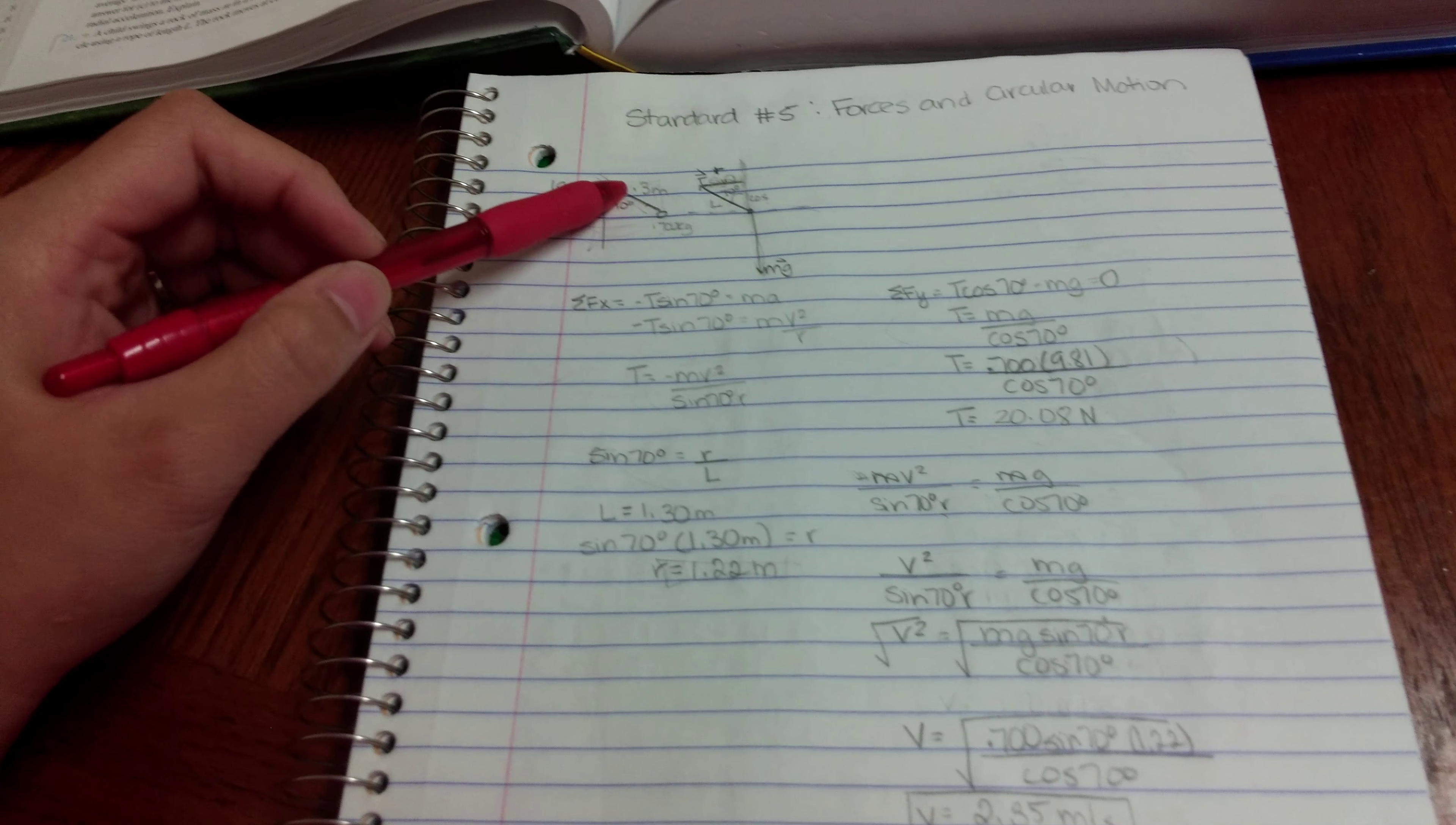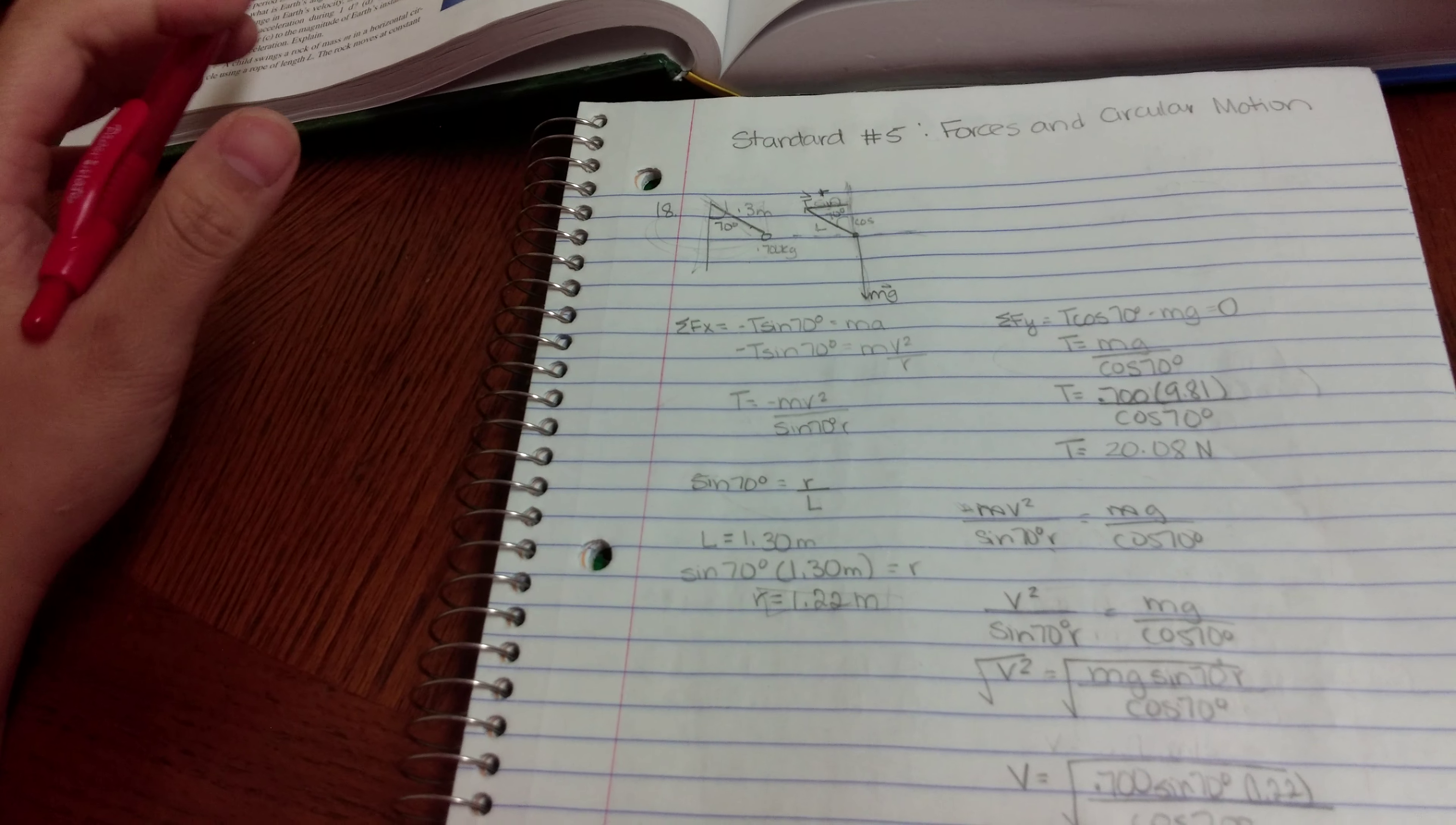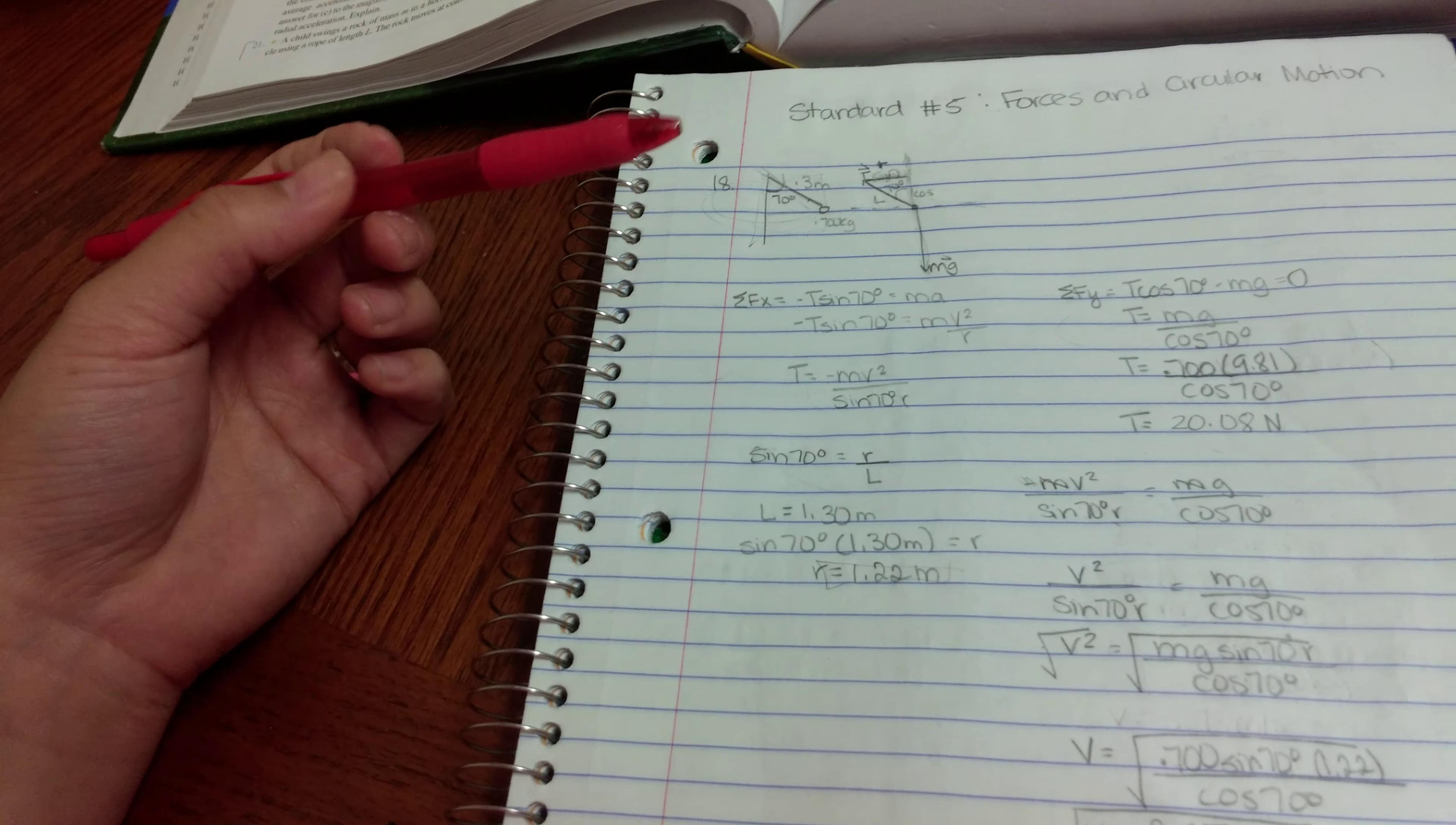And the rope and the ball is attached to the pole. And it tells me that the entire apparatus, including the pole, rotates about the pole's symmetry axis. And it tells me that the rope makes the angle of 70 degrees with respect to the vertical. So there's my angle. And then they're asking me for a tangential speed.